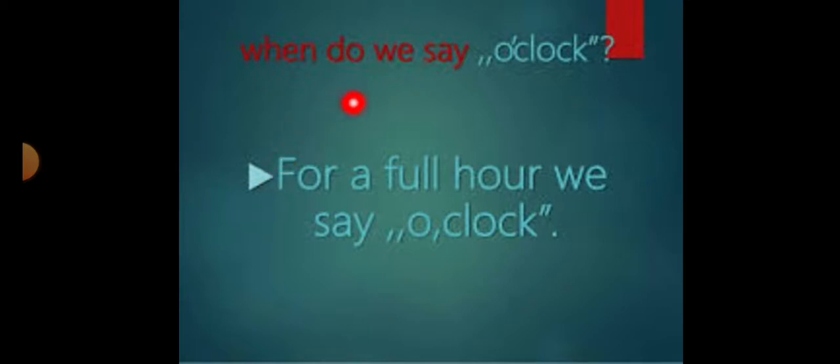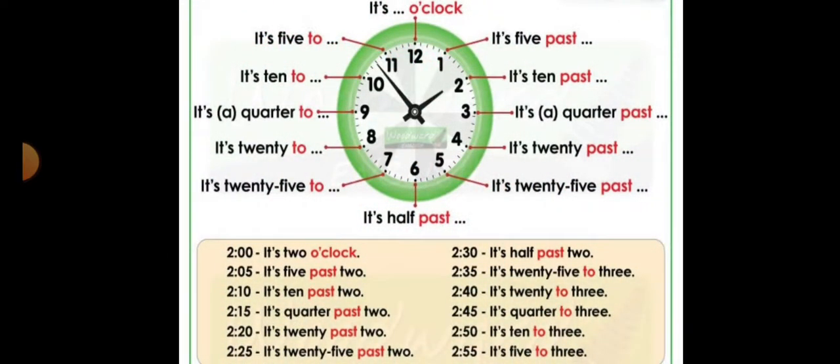So viewers, when do we say o'clock? When the clock is striking a full digit. For example, then we will say one o'clock, two o'clock, three o'clock. So in this way we will say o'clock. Do you know o'clock stands for what? It is off the clock. O is a contraction here, o apostrophe then clock. So we will say off clock.